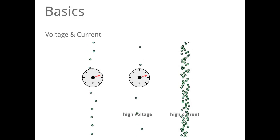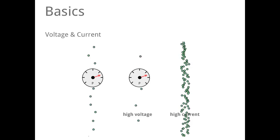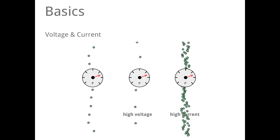In the second example, we have a high current. There are a lot of electrons on their way but they are very slow. So the voltage is low. Again, the power is equal to the first two examples.